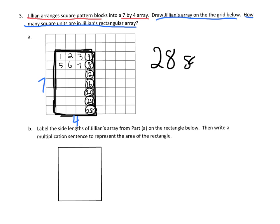Now question B says label the side lengths, and I kind of already did that up here. We know that this one's 7 and this one's 4. Then it says write a multiplication sentence, so that multiplication sentence is going to be 7 times 4 equals 28.